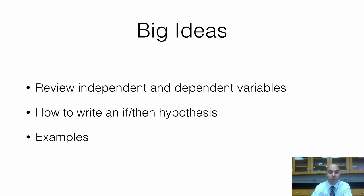All right, gang, so we are going to be doing a lot of experiments in this class. One of the important things you need to understand is how to write a scientific hypothesis. There are lots of different ways to do this — this is how we're going to do it in our class. The big ideas for this video: we'll review independent and dependent variables, talk about how to write an if-then hypothesis, and I've got some examples for you.